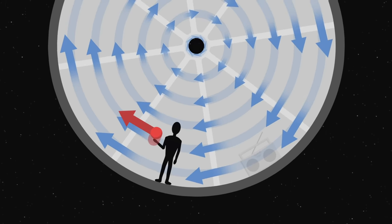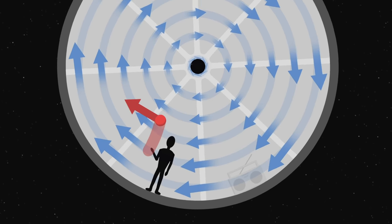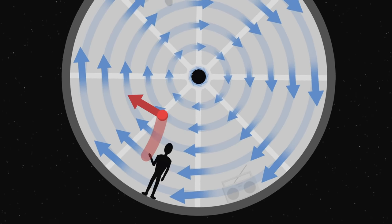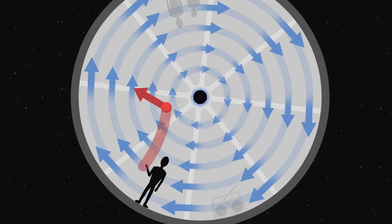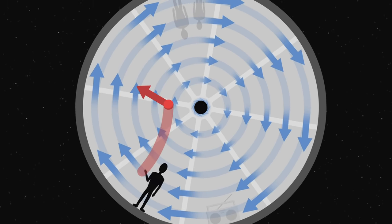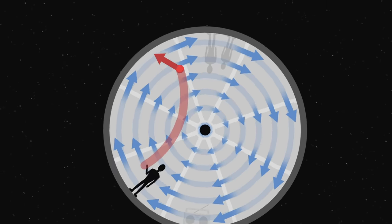But when he throws the ball upwards, it gets closer to the axis of rotation. Here, it should move slower to follow the wheel, but since it has conserved its initial motion, the ball moves faster than the wheel and it will therefore edge ahead and eventually fall in front of the astronaut.